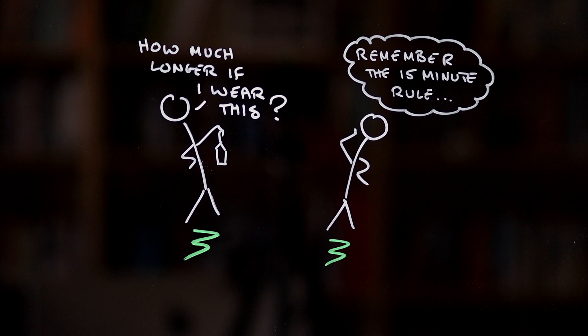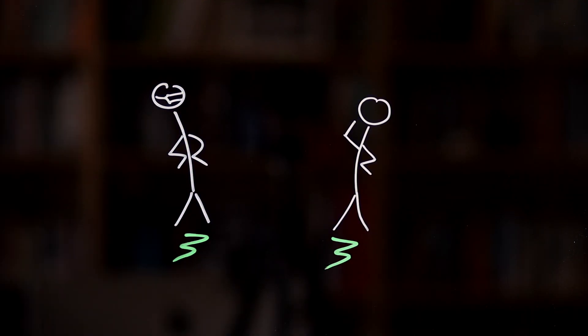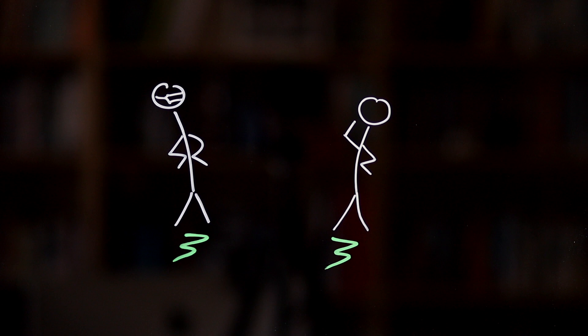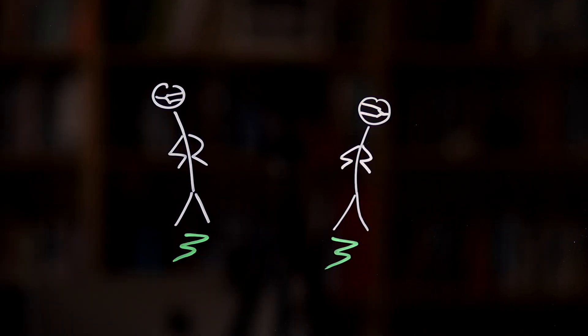First off, imagine that just one of you is wearing that Etsy cloth mask. That'll give you an extra 5 minutes over CDC's 15-minute rule of thumb. This increases to an extra 11 minutes if you're both wearing cloth masks.